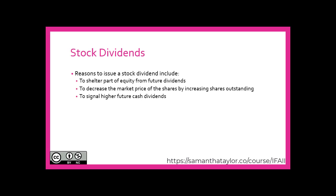Reasons why a company may choose to issue stock dividends include: to shelter part of equity from future dividends — stock dividends decrease retained earnings and increase contributed capital, so that amount cannot be paid out in future dividends; to decrease the market price of shares by increasing the number of shares outstanding (the opposite of a share buyback); or to signal higher future cash dividends, as historically cash dividends have increased after a stock dividend, so declaring one can send this message.